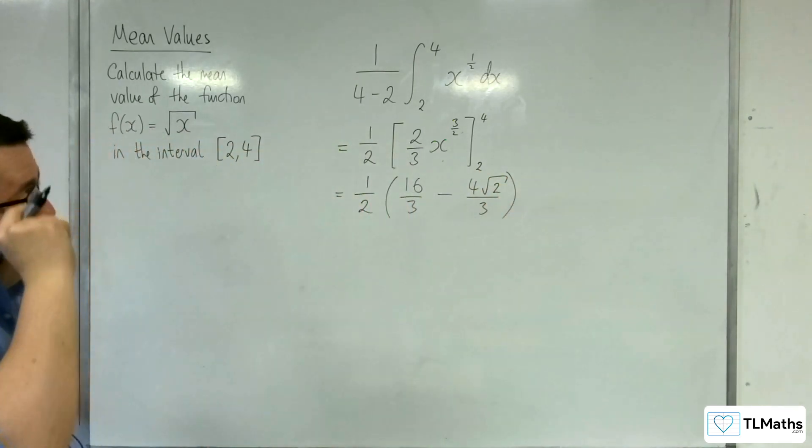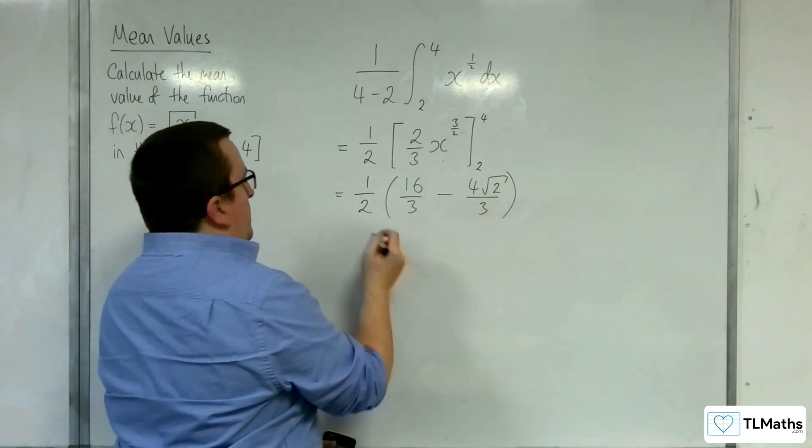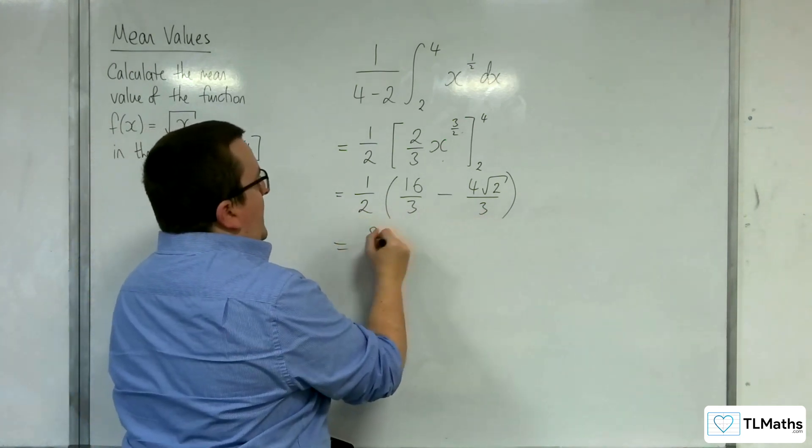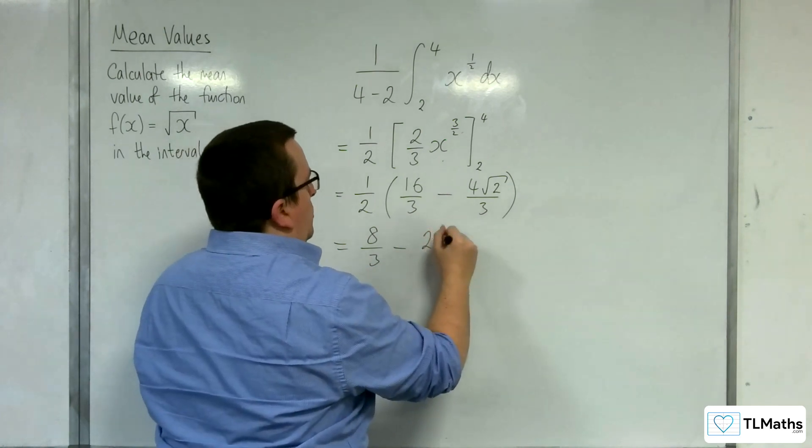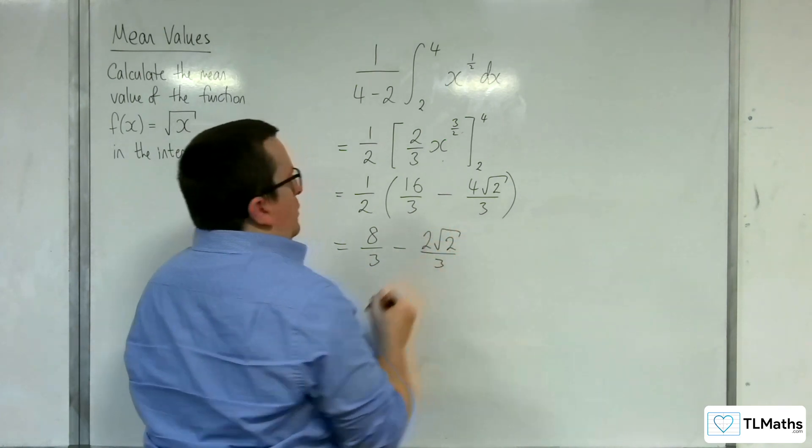So multiplying that through by a half, we can get 8 thirds take away 2 root 2 over 3.